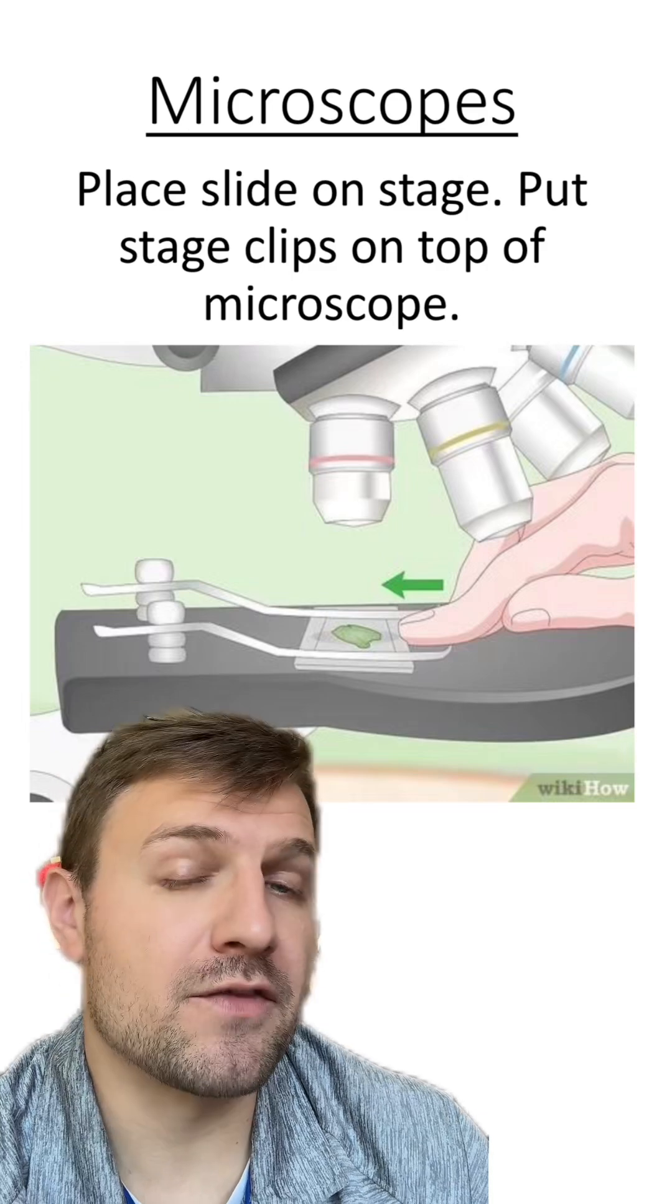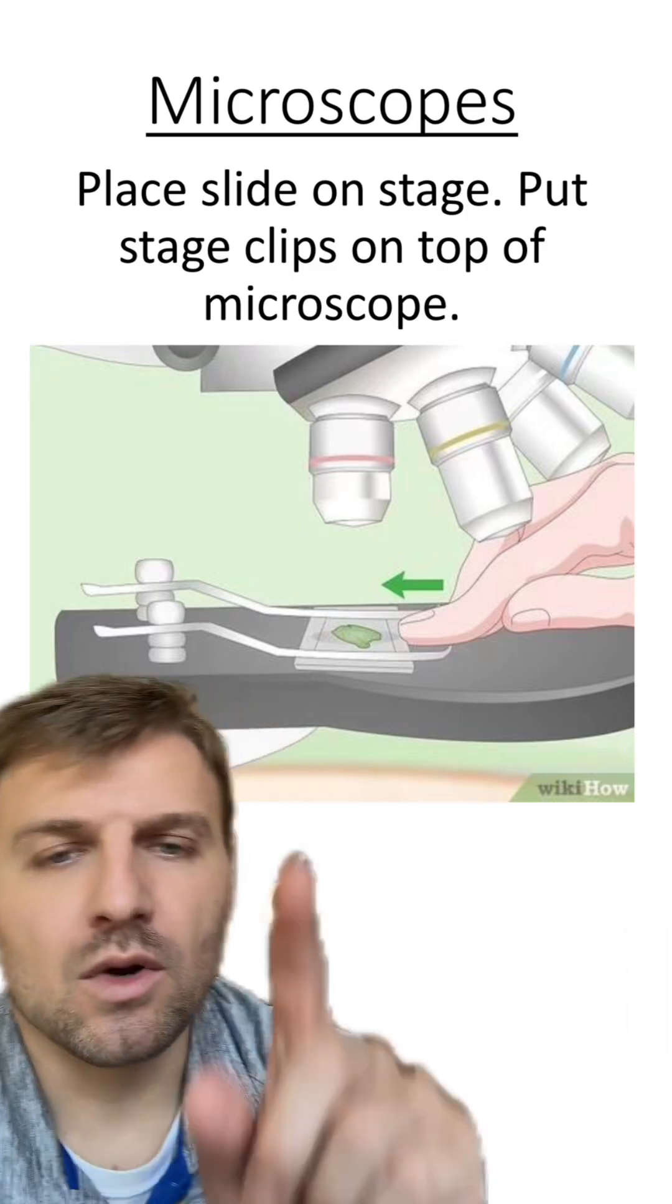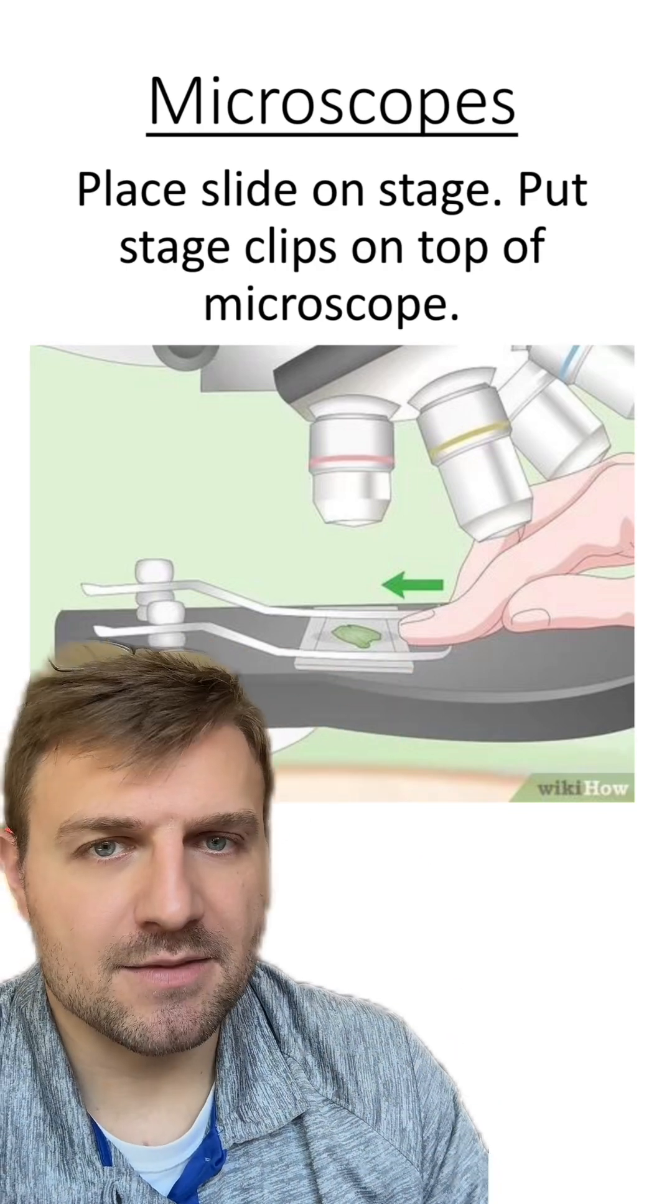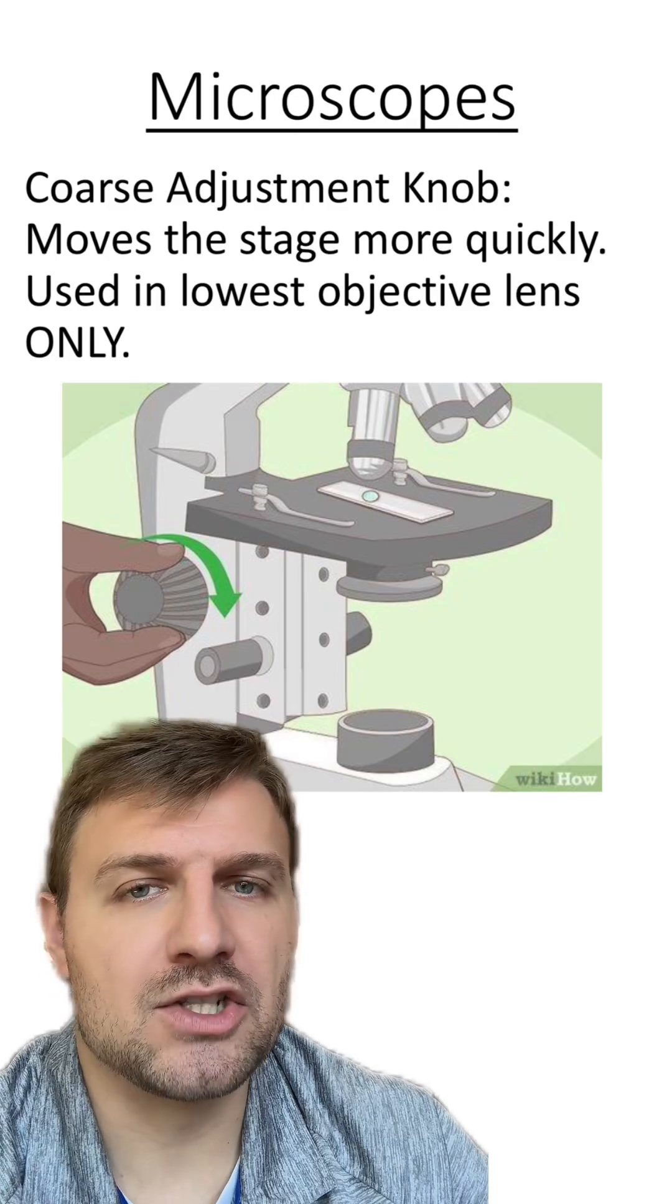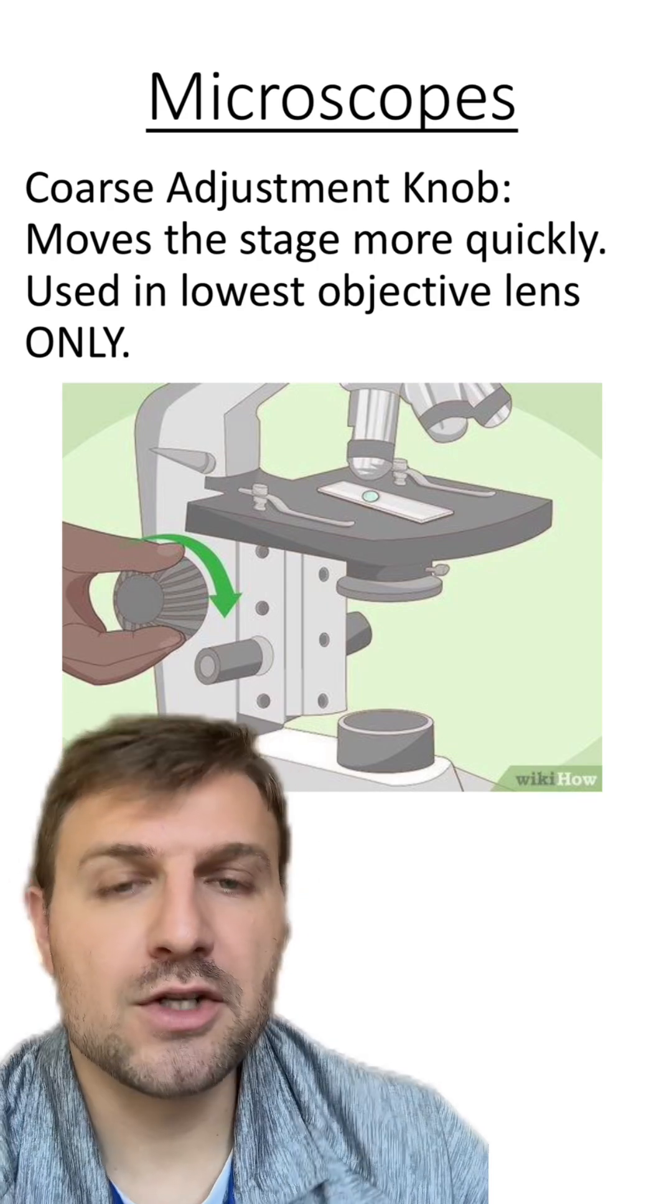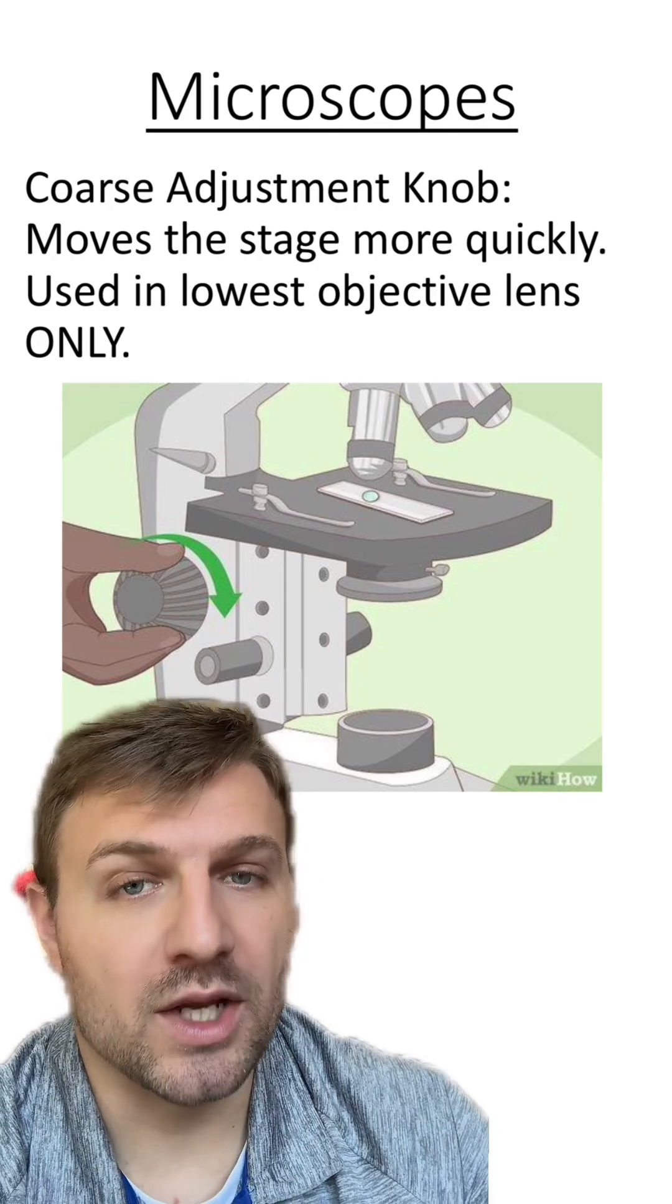Next, you're going to place the slide or whatever you're looking at on the stage. You also want to place these stage clips on top of the slide to keep it in place. At this point, you're going to use one of the adjustment knobs, specifically the larger one, the coarse adjustment knob. That's going to move the stage up and down more quickly.